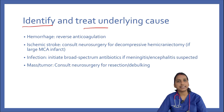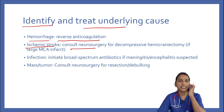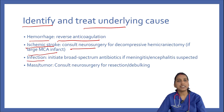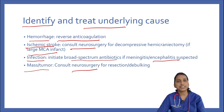Identifying and treating the underlying cause: in hemorrhage, consider anticoagulation reversal. In ischemic stroke, consult neurosurgery for decompressive hemicraniectomy if a large MCA infarct is present. In case of infection, initiate broad-spectrum antibiotics if meningitis or encephalitis is suspected. For a mass or tumor, consult neurosurgery for resection or debulking.